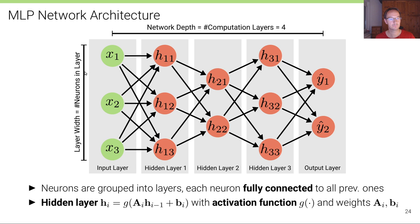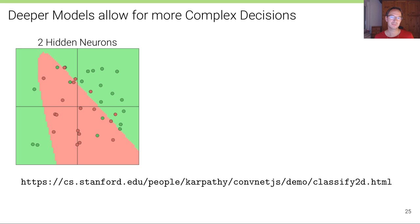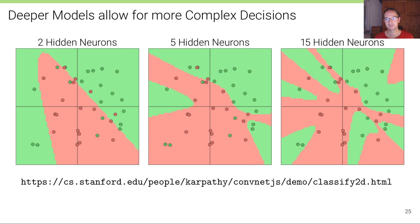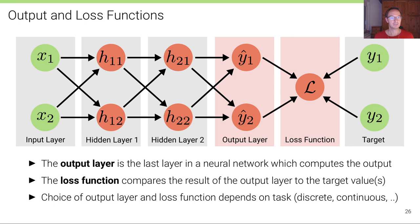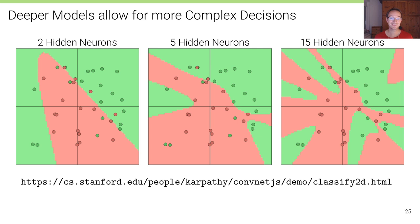The width is how many neurons we have in each layer. Neurons are grouped into layers and each neuron is fully connected to all previous ones. Deeper models allow for more complex decisions — as shown in an example from Andrej Karpathy's website with a live demo — comparing decision boundaries of neural networks with two, five, and fifteen hidden neurons on the same dataset. Both the depth and the width determine how complex the decisions can be.